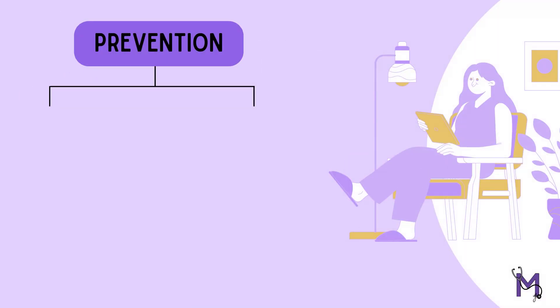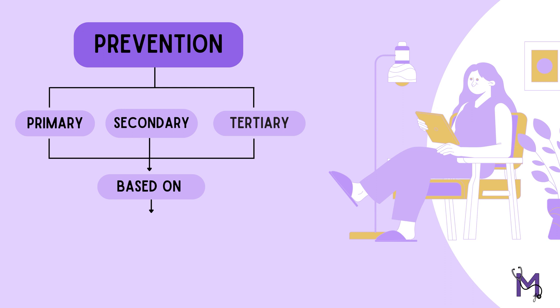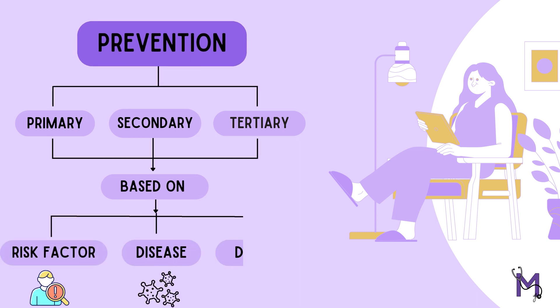Prevention can be done at mainly three levels: primary, secondary, and tertiary. Let us understand each level based on the presence of risk factors, disease, and disability.